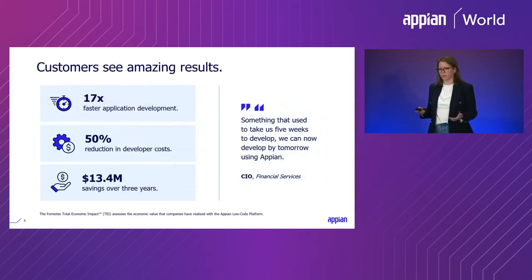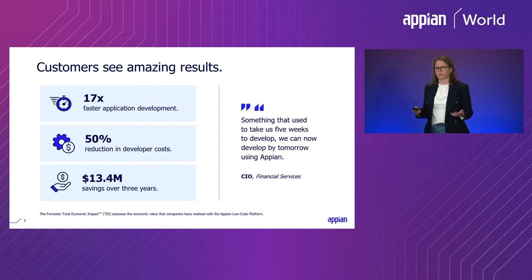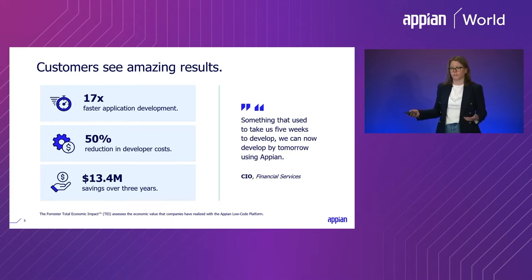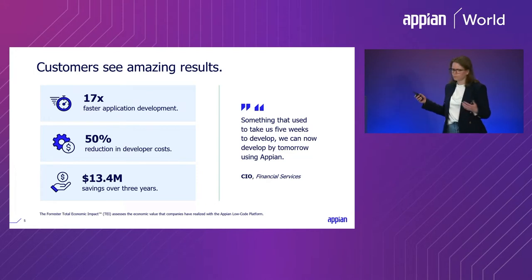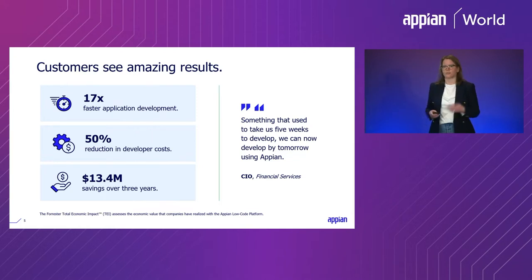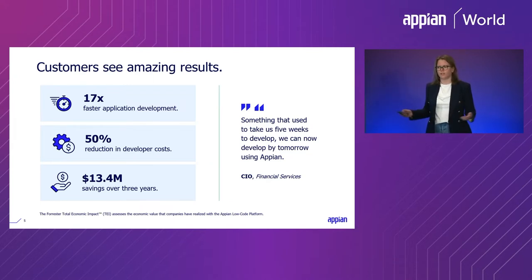Customers who use the low-code platform see amazing results. Here are some numbers from a recent Forrester study where they independently interviewed many Appian customers. Low code is faster and easier to build compared to custom code — 17 times faster, 50% lower costs. Looking at how a company experiences the benefits of a low-code application over time, there's a lot of cost savings: $13 million on average for a typical scenario. What used to take five weeks to make, you can now make in days with Appian. Weeks take days now — something that used to take months can take weeks, and years can take months.